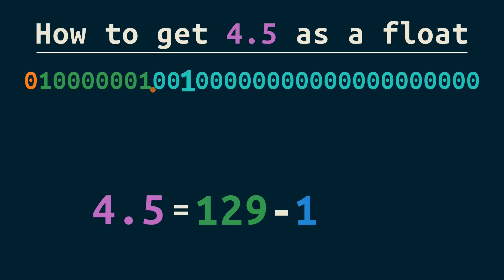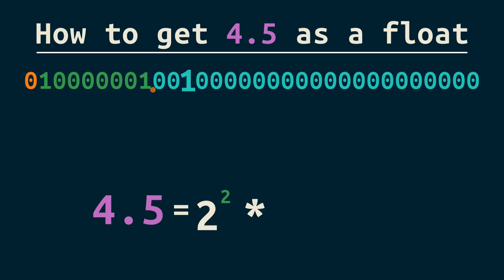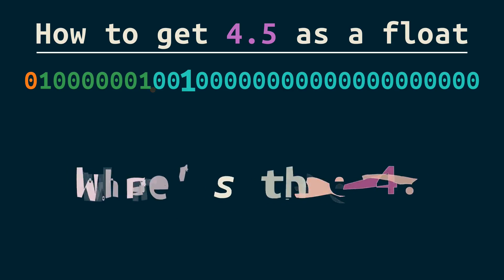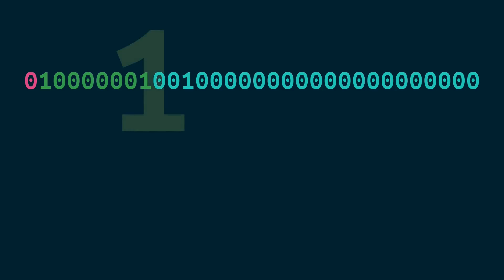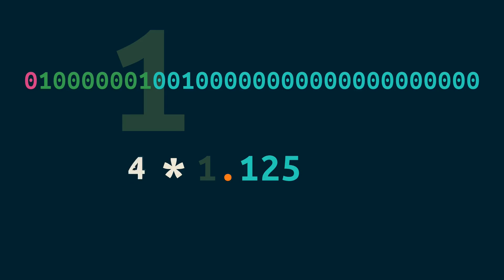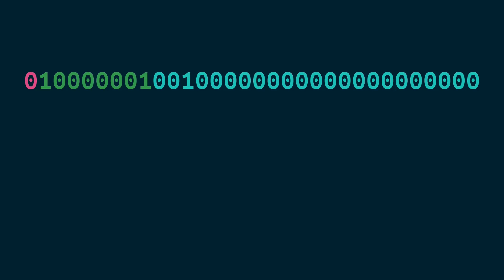And we get... not the number we were looking for. Where did the 4 go? We forgot the hidden 1 — remember that from the start of the video? When we add the hidden 1, the math works out. So we act like there's a 1 here, but if you look at the binary in your computer for 4.5, you won't find a 1 in that spot. Why did the engineers who created IEEE 754 floats hide a 1 here?